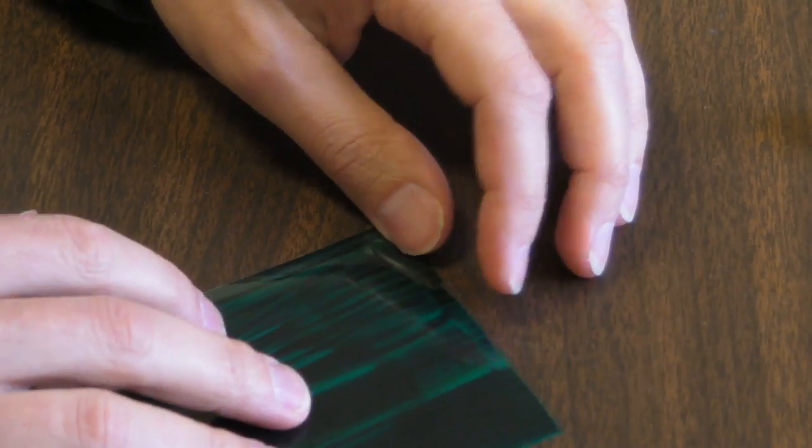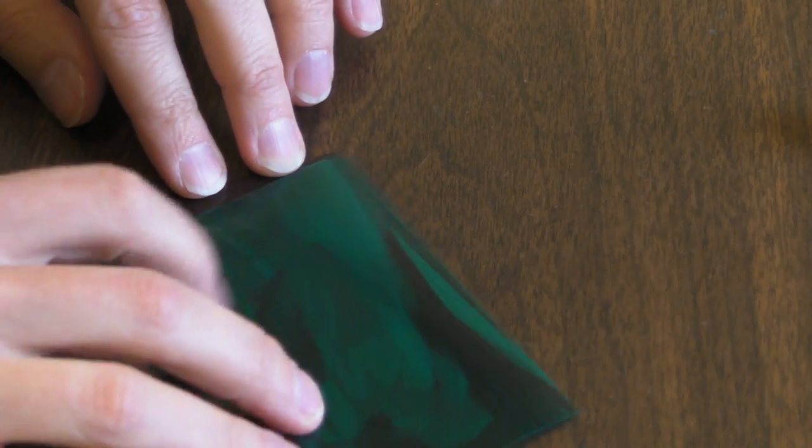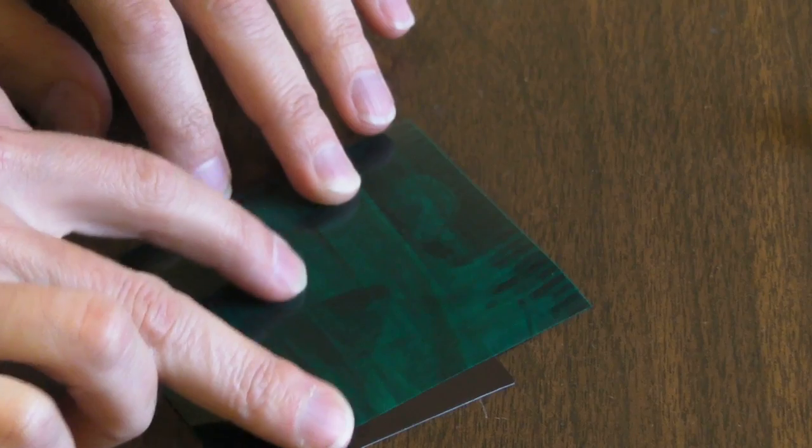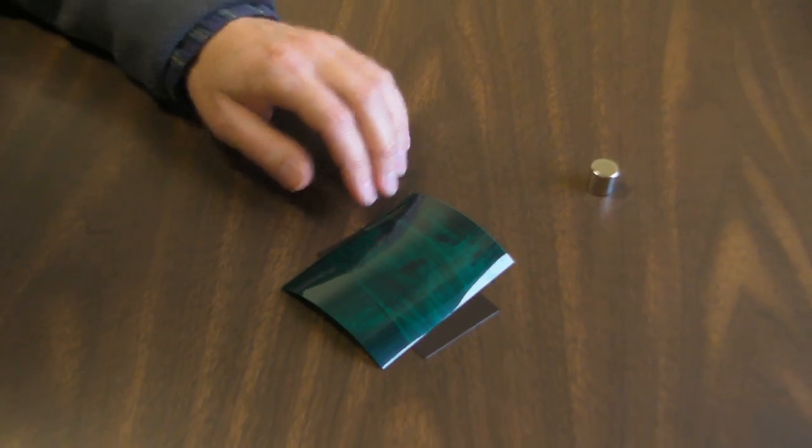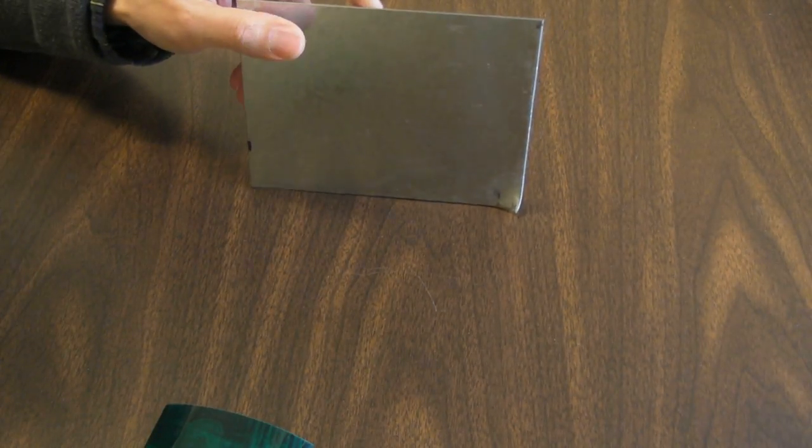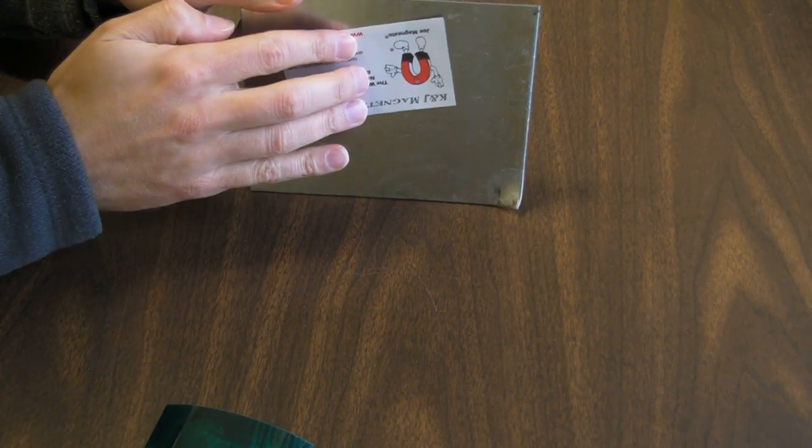Take our viewing film, set it on top, and we don't see very much. It's kind of a mess. When we try to stick it on this piece of steel, it doesn't work very well.